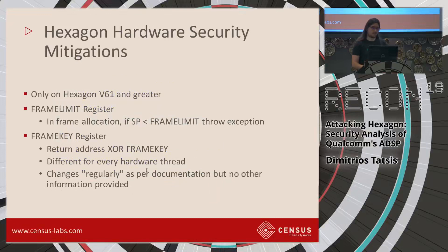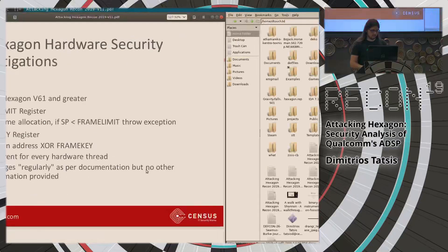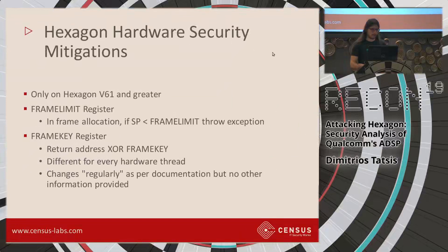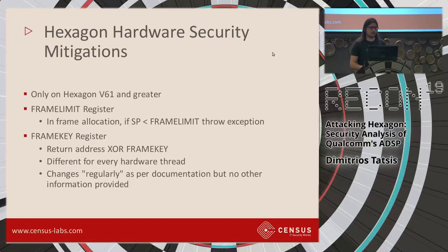Hexagon has a few hardware security mitigations present in Hexagon version 61 and later. There's a frame limit register: when there's a new call to a function, if the stack pointer is less than the frame limit register, an exception is thrown — basically a mitigation against arbitrary function calls in a remote code execution scenario. There's also a frame key register which holds a key that is XORed with the program counter saved on the stack as the return address. The documentation states it's different for every hardware thread and changes regularly, but no other information is provided.